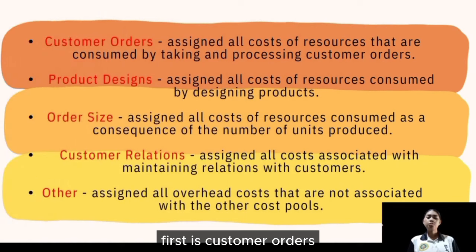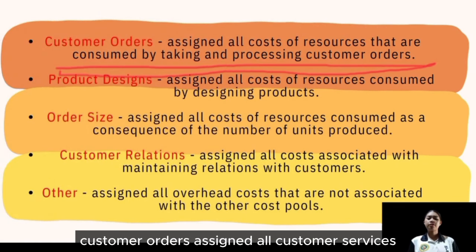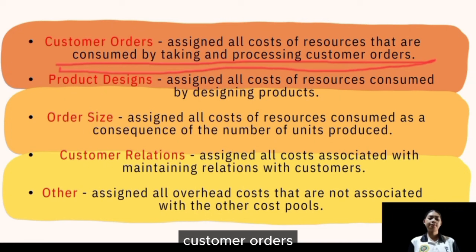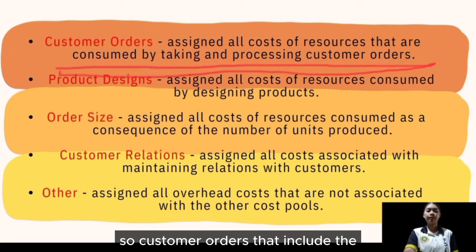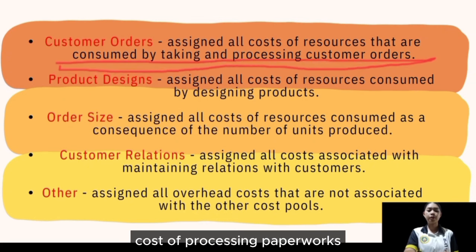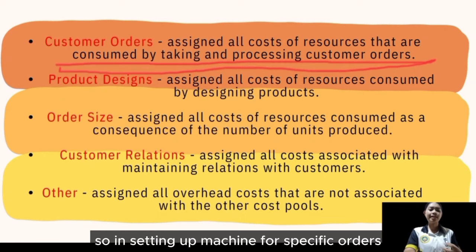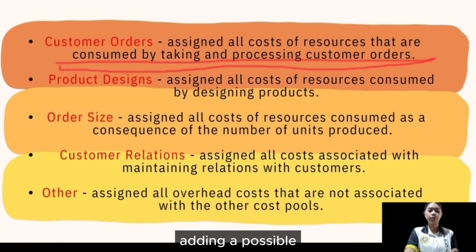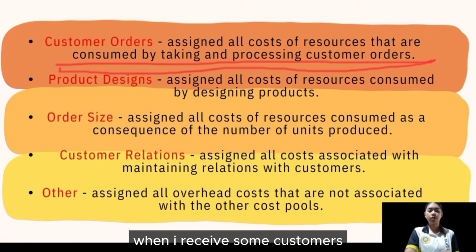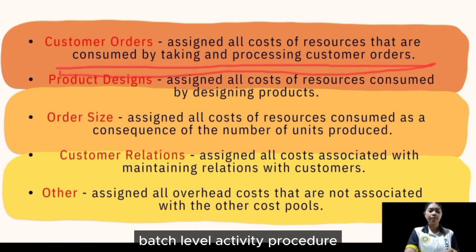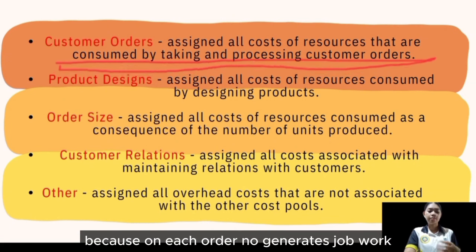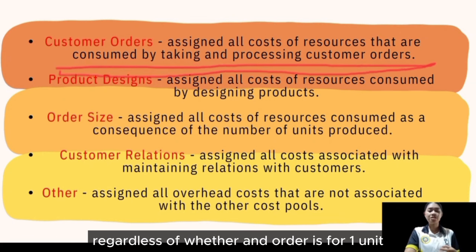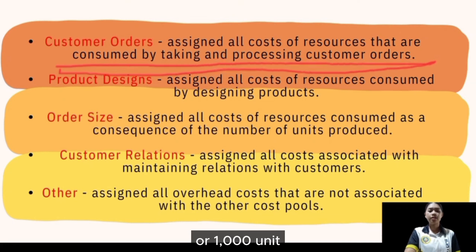The first activity measure is customer orders, which assigns all costs and resources consumed by taking and processing customer orders — including the cost of processing paperwork and any costs involved in setting up machines for specific orders. The activity measure for this cost pool is the number of orders received from customers. Customer orders represent a batch-level activity because each order generates work regardless of whether the order is for 1 unit or 1,000 units.